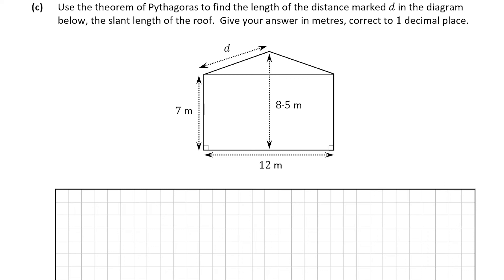Now let's look at part C. We're asked to use the theorem of Pythagoras to find distance d. Pythagoras's theorem can only be used in right-angled triangles. The yellow triangle shown has a right angle, and the formula is c² = a² + b², where c is the side across from the 90 degrees. In our case d is the hypotenuse — the side across from the right angle — with a and b being the other two sides.